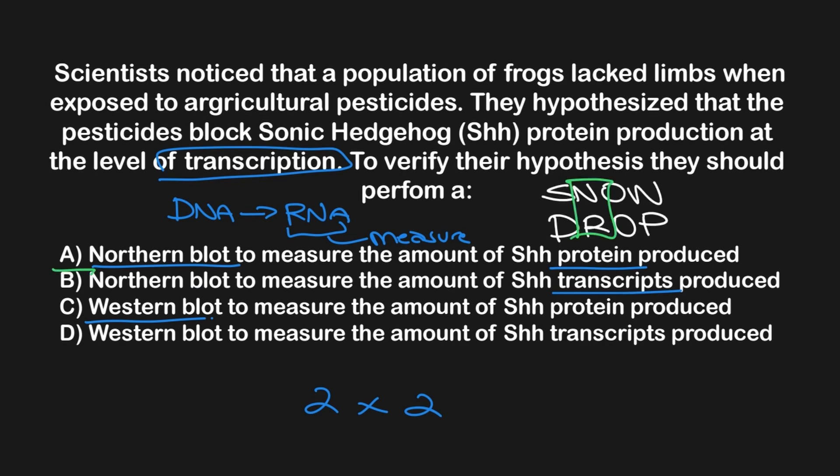Therefore, answer choice B must be correct, since it correctly identifies the type of blot and what that blot can measure here: RNA, aka transcripts. Answers A and D are incorrect on the basis of content alone, since they mismatch northern blot as measuring protein and western blot as measuring RNA.